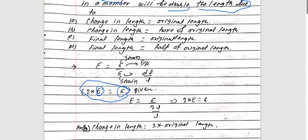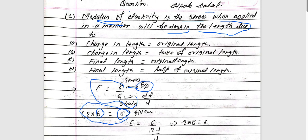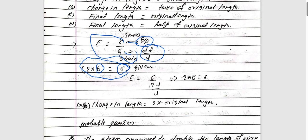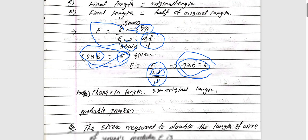We need to change the pattern and analyze the stress. The formula is: stress upon change in length upon original length. If the change in length is 2L, then dL equals 2L. So E equals sigma divided by (dL/L). The answer is: change in length is 2 times original length.